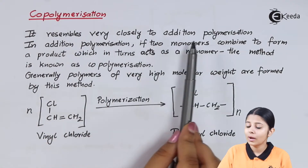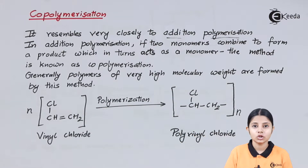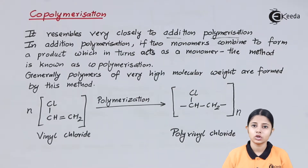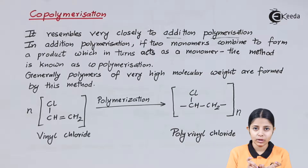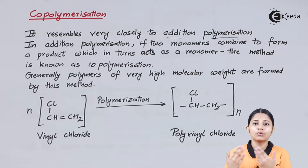Copolymerization resembles very closely to addition polymerization. In addition polymerization, two reactants come together and club together — they do not form any byproduct, and finally form a product. So instead of reactants we will have monomers. Two monomers come together, club together, do not form any byproduct, and form the polymer. That is addition polymerization.